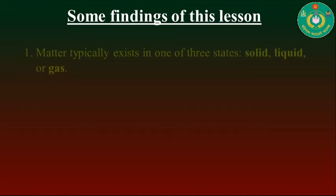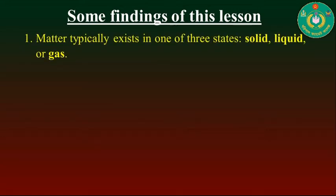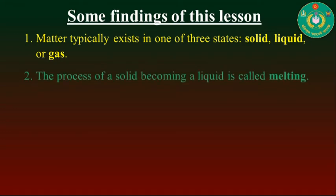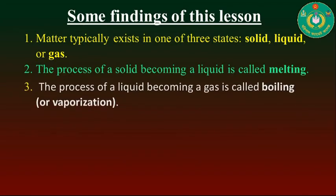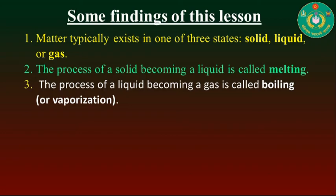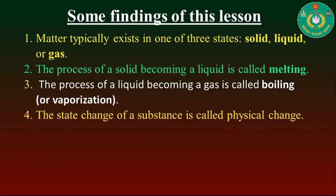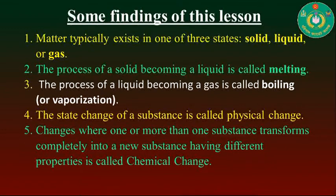Now some findings of this lesson. First, matter typically exists in one of three states: solid, liquid, or gas. Second, the process of a solid becoming a liquid is called melting, and the process of a liquid becoming a gas is called boiling or vaporization. Third, the state change of a substance is called a physical change, while a change where one or more substances transform into a new substance with different properties is called a chemical change.